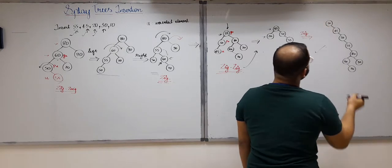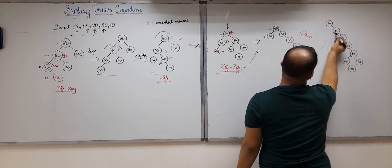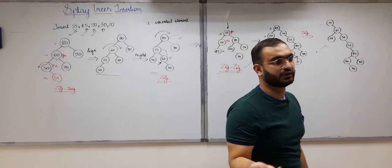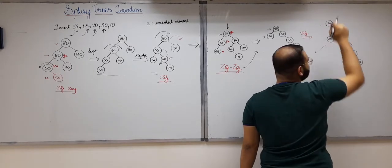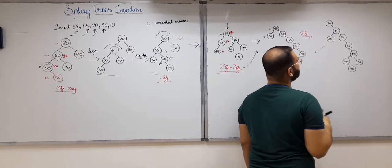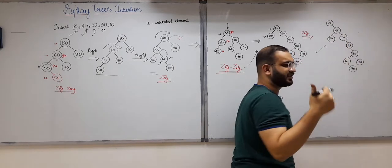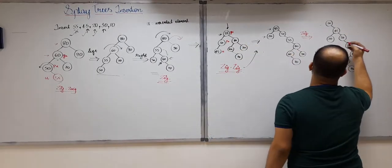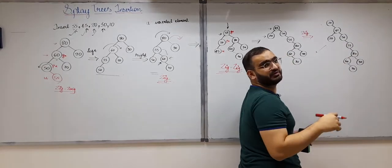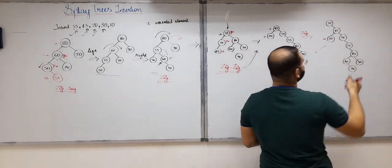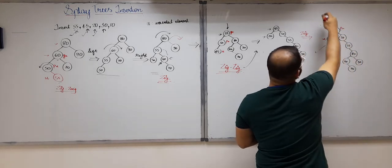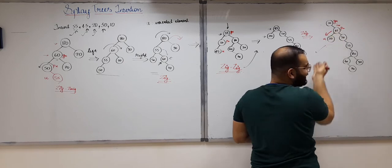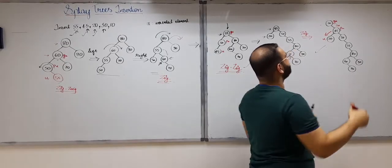Now let us insert 30. At the root: 30 is greater than 20 so go right; 30 is less than 45 so go left — and 30 is inserted here. The inserted element is not at the root so we must splay it. Here the direction from the grandparent to parent is right, and the direction from parent to u is left — these are opposite directions — so we perform the zigzag operation.